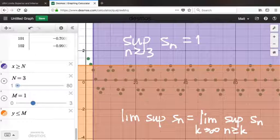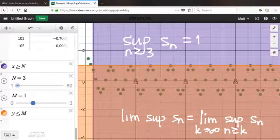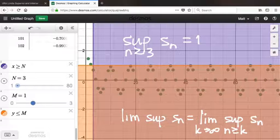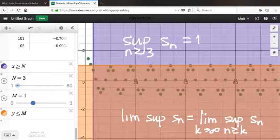We saw in this last definition why lim sup gets its name. It's the limit of the suprema of the tails, as the tail that we look at marches out towards infinity.